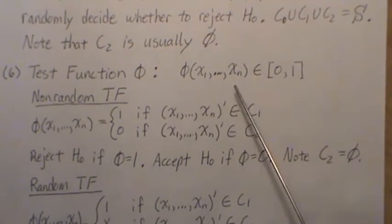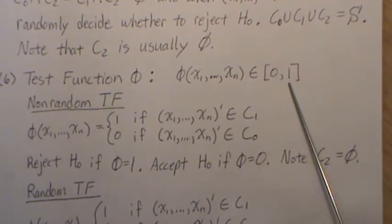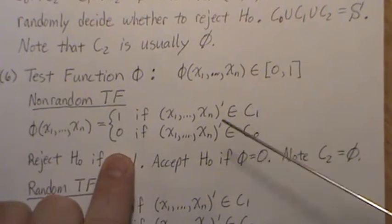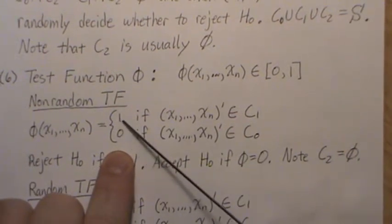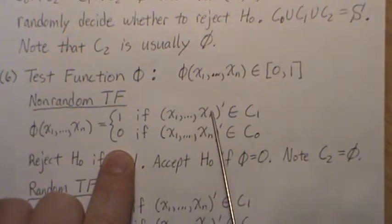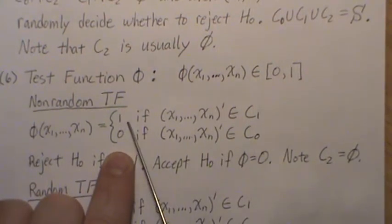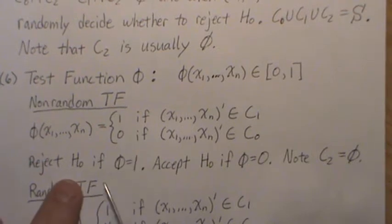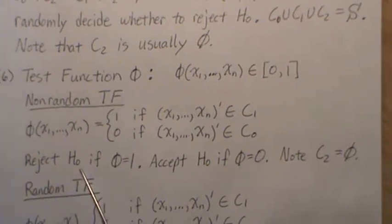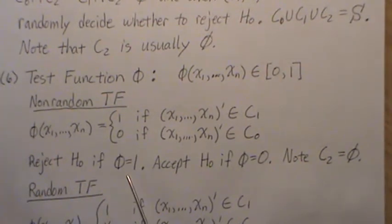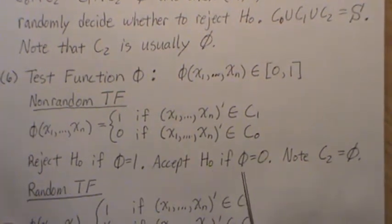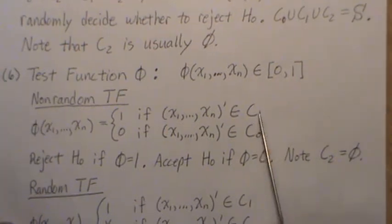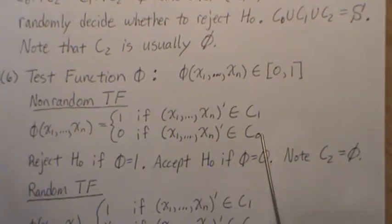Now the test function is a function between 0 and 1. A non-randomized test function has two possible values: 0 and 1. If the sample lives in C1 it's a 1, if the sample lives in C0 it's a 0. We reject H0 if phi is 1, accept H0 if phi is 0. In this case we set C2 to the empty set. These two subspaces make up the entire sample space.